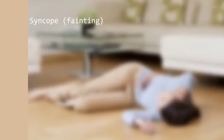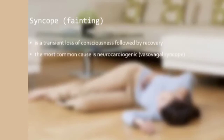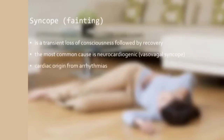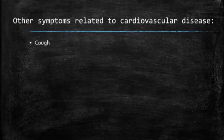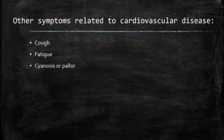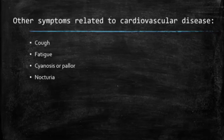Syncope, or fainting, is a transient loss of consciousness followed by recovery. The most common cause is neurocardiogenic syncope, also called vasovagal syncope. In a patient with syncope, always consider cardiac origin from arrhythmias. Other related symptoms include cough due to pulmonary vascular edema or congestion, fatigue due to decreased cardiac output, cyanosis or pallor, and nocturia, wherein recumbency at night promotes fluid reabsorption and excretion — this occurs with heart failure in the ambulatory patient.